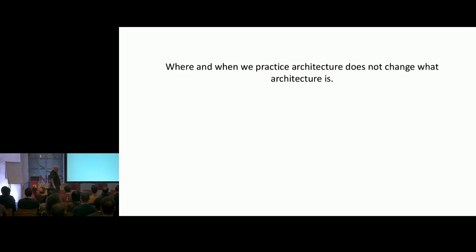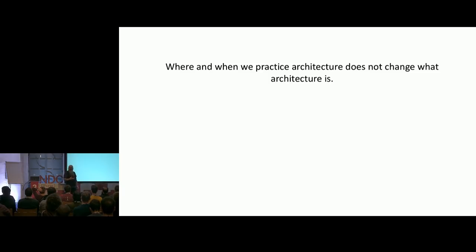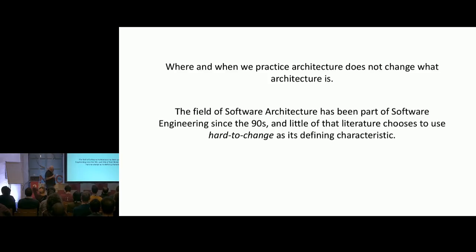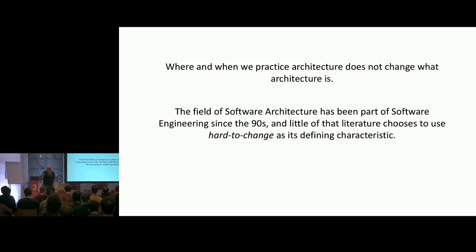My problem with this definition is that it makes architecture a temporal property of the system. Architecture exists at any point in your lifecycle — you may have to make significant design decisions throughout. The fact that you might try to do those before writing code is irrelevant. And when you go look at computer science, which has been talking about architecture since the 1990s, they never define architecture as something that is hard to change. That's not the working definition they use.